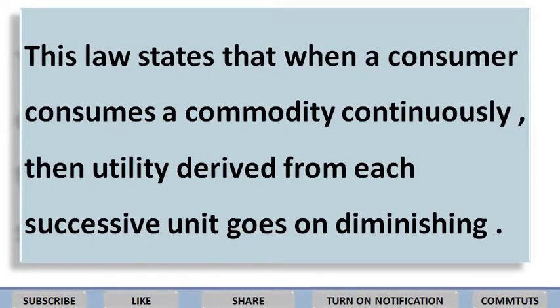This law states that when a consumer consumes a commodity continuously — यानि कि लगातार किसी भी commodity को consume करता जाएगा — then utility derived from each successive unit goes on diminishing. जो satisfaction मिलने वाला है हर unit से, वो decrease होता जाएगा।